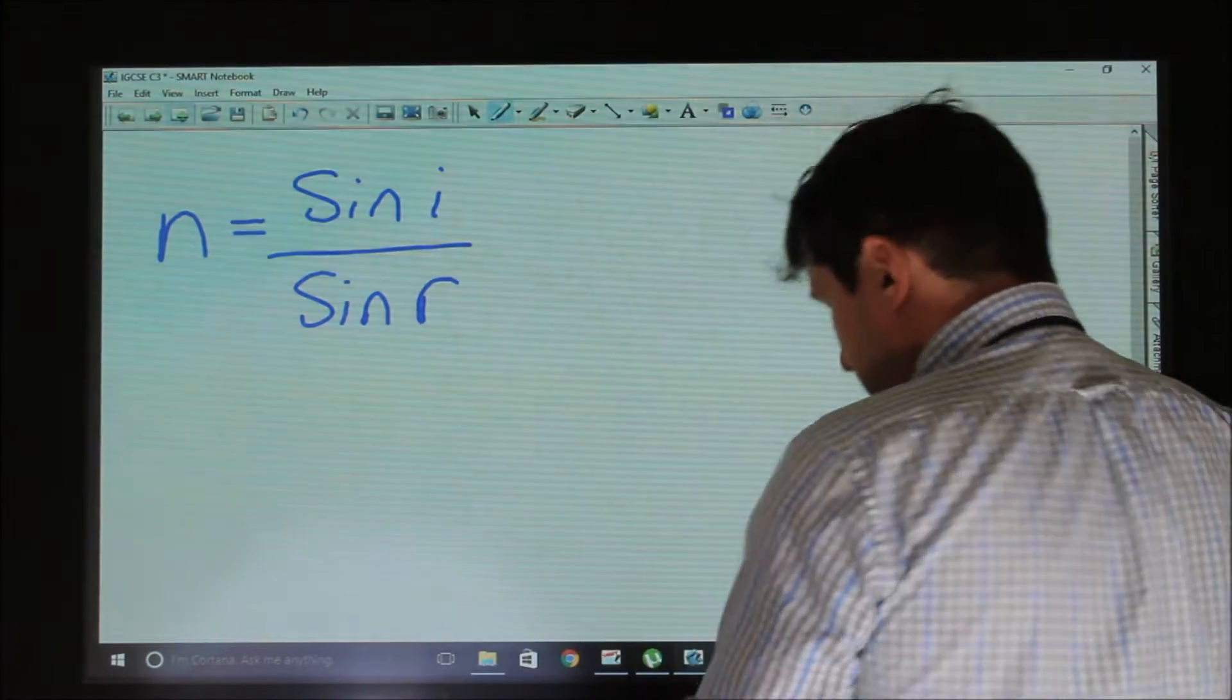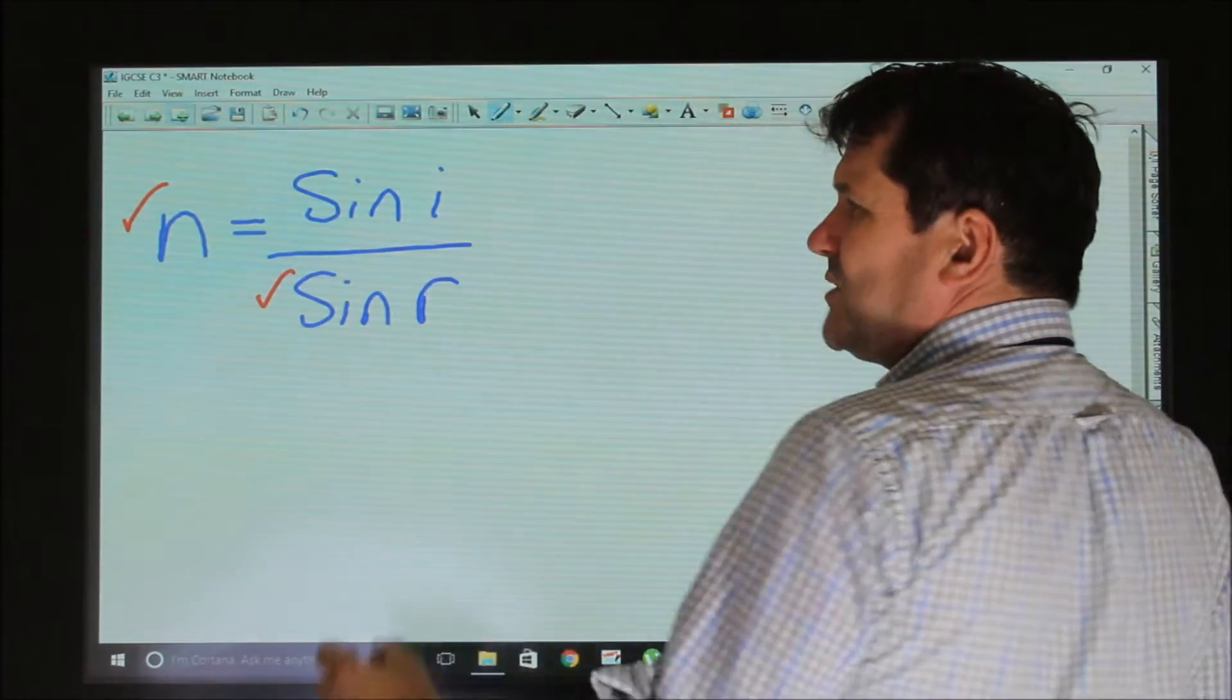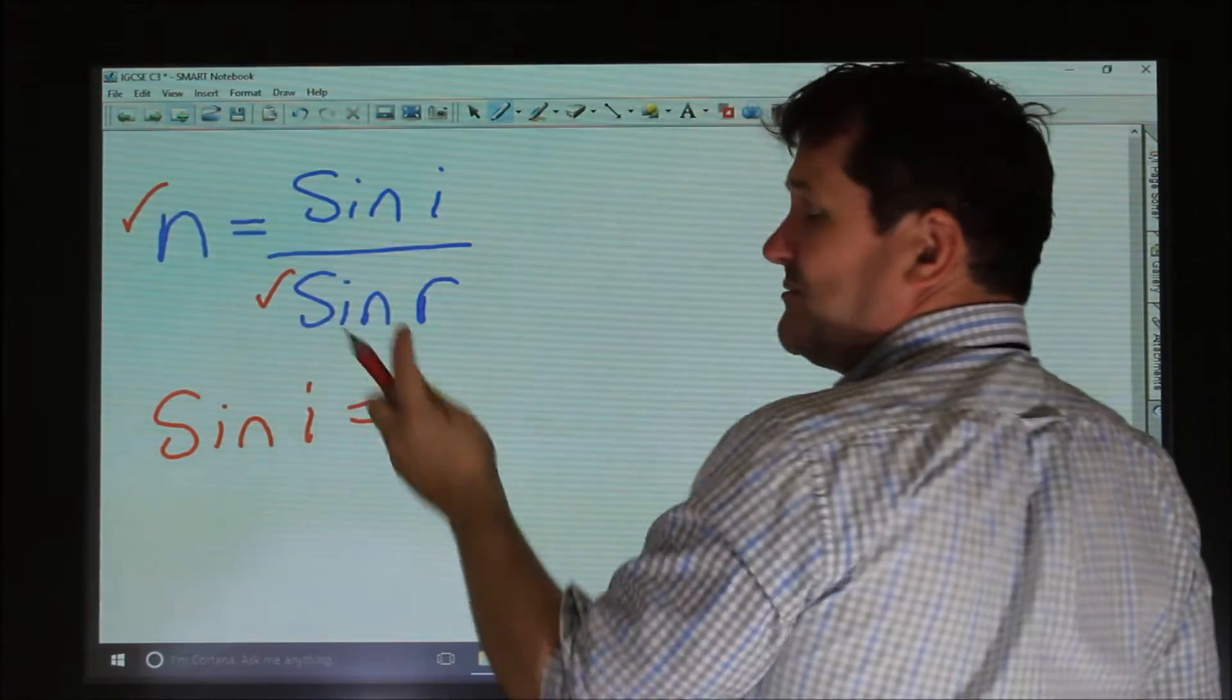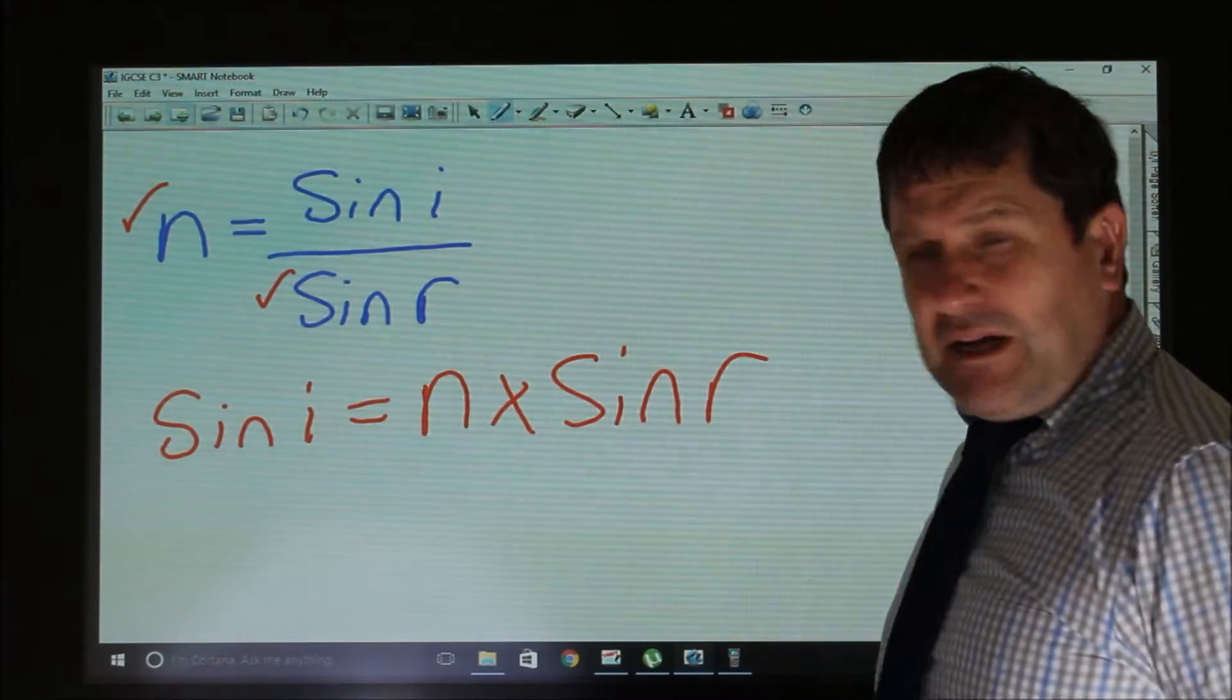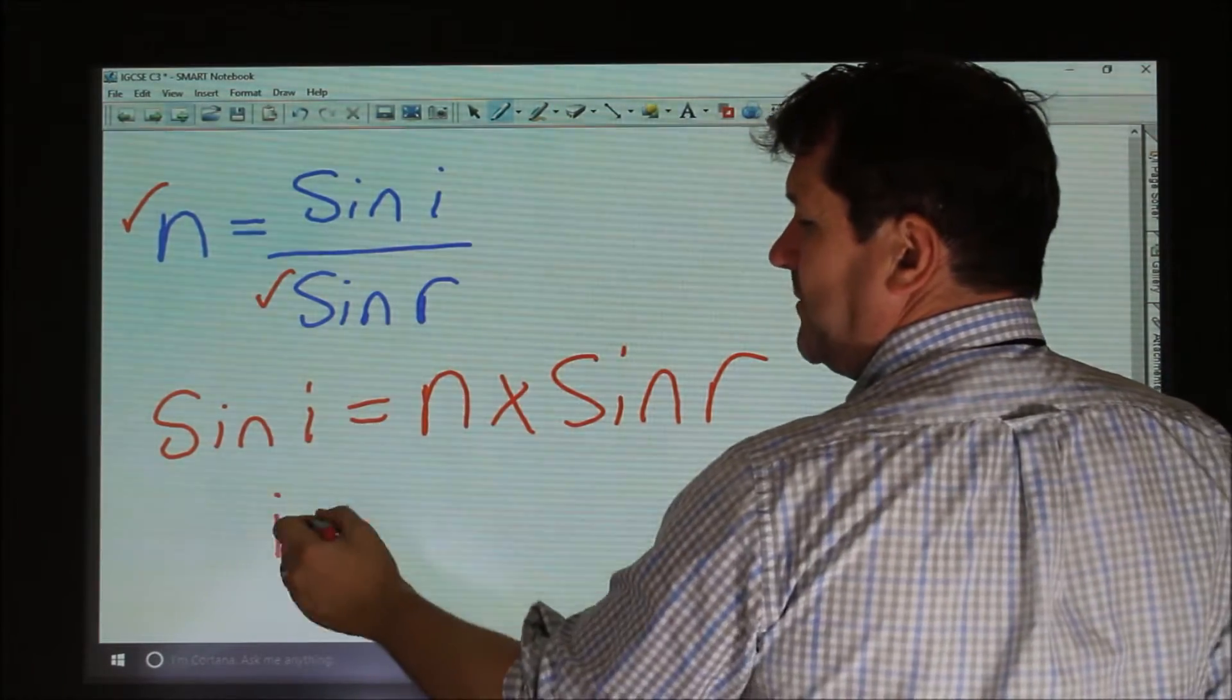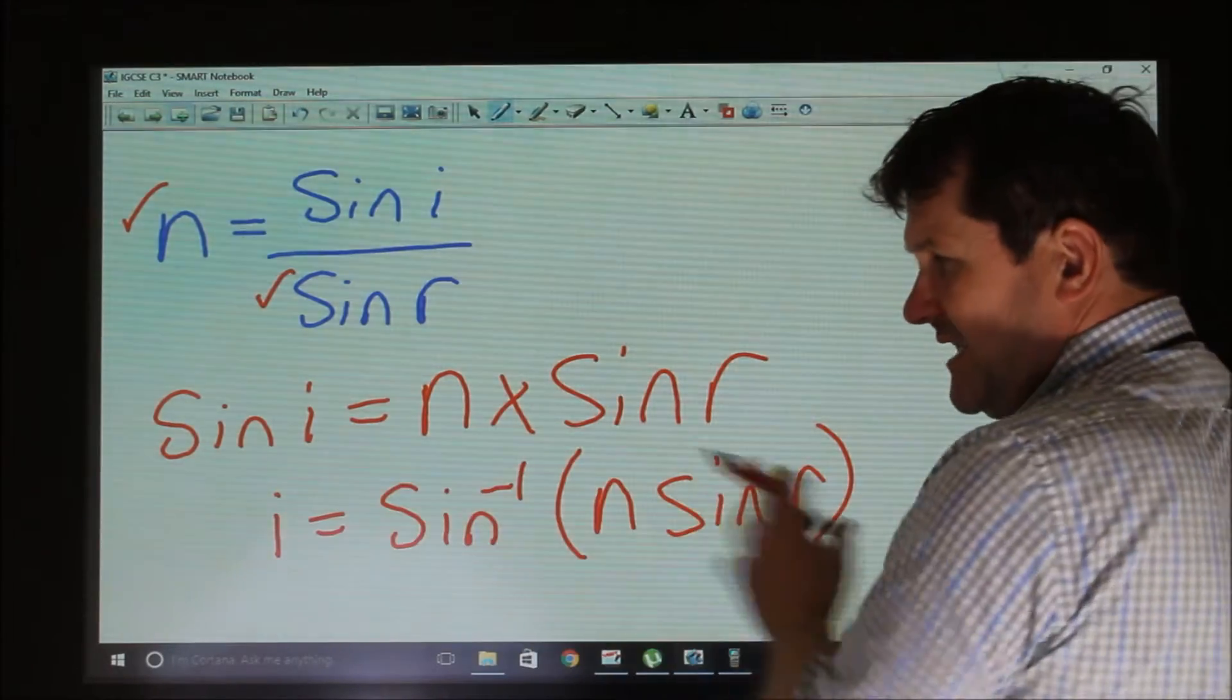For example, if we were given the refractive index N and the angle of sine R, the angle of refraction, then we would say that sine I equals, sine R comes up to the other side of the equation, we'd multiply both sides by sine R and it would be N times sine R. Now when we know N and sine R, we have to remember how to rearrange this equation. So I would become the inverse sine of N sine R.